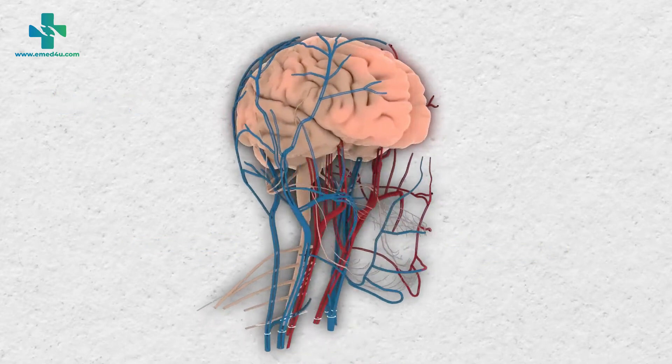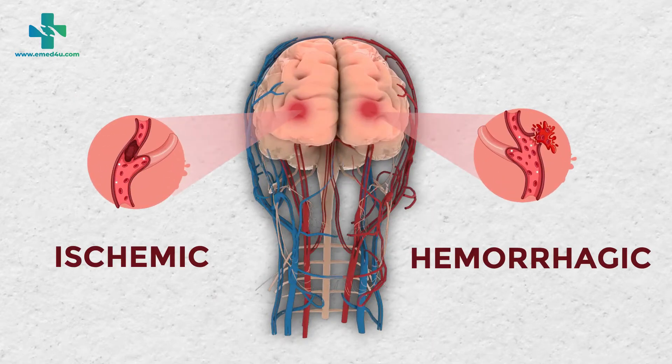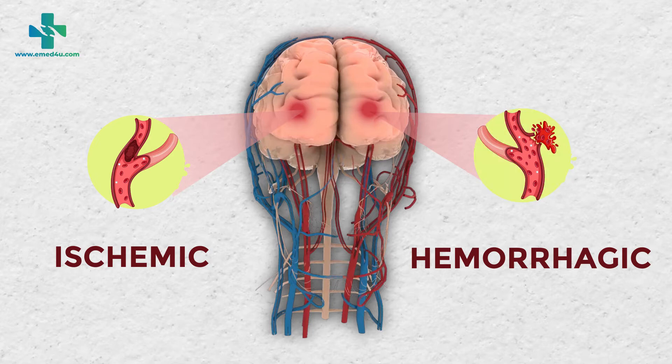There are two major types of stroke: ischemic and hemorrhagic. Ischemic stroke is due to a clot, and hemorrhagic stroke is due to a bleed.